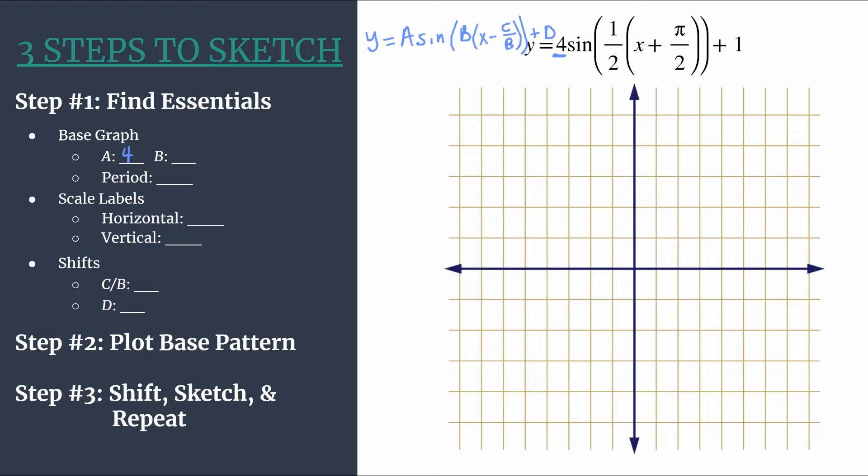And then we have b. So b is this 1/2 here that we factored out. And what this tells us, well, a couple things. It tells us first, how many cycles of our graph will happen between 0 and 2π. So half of a cycle. And that's just helpful to know up front. Kind of gives you an idea of what to expect your graph to look like. And it also helps us calculate the period. And so to do that for a sine graph, we take 2π and divide by b. So 2π divided by 1/2 is the same thing as multiplying times 2/1. So of course, that means our period is going to be 4π.